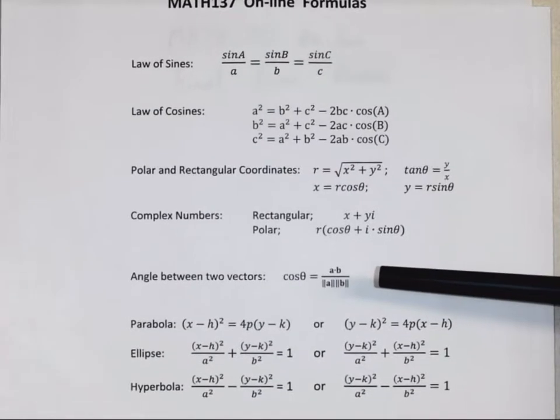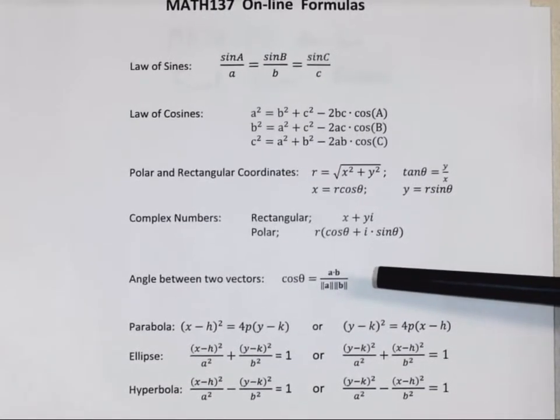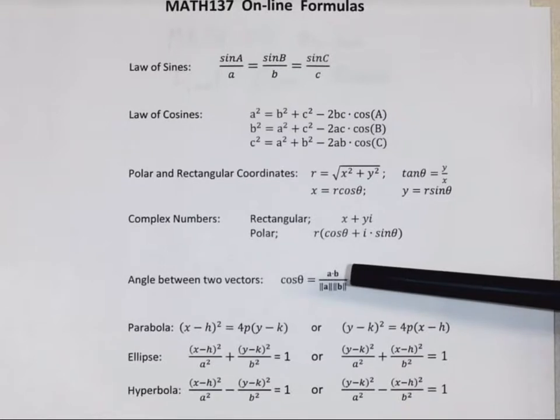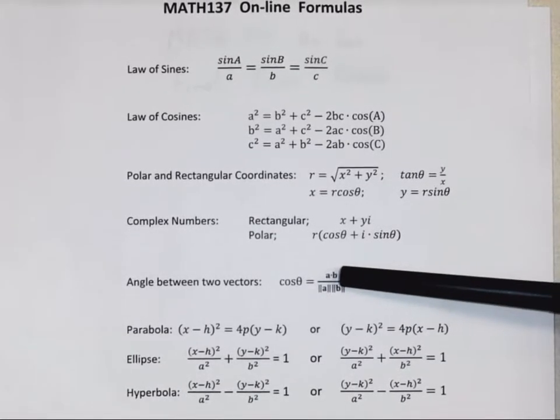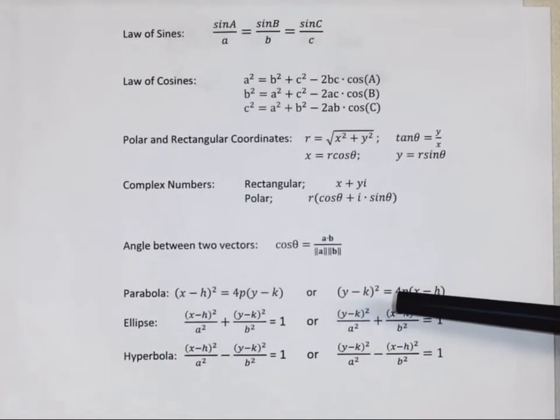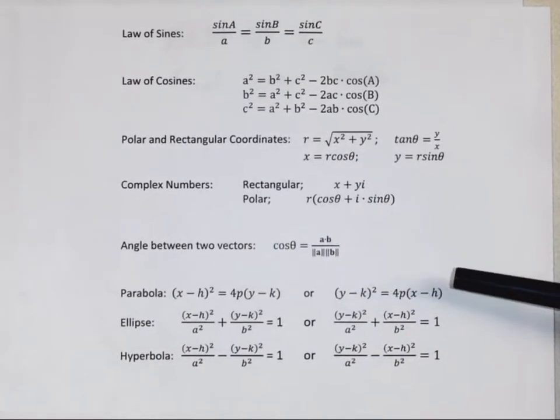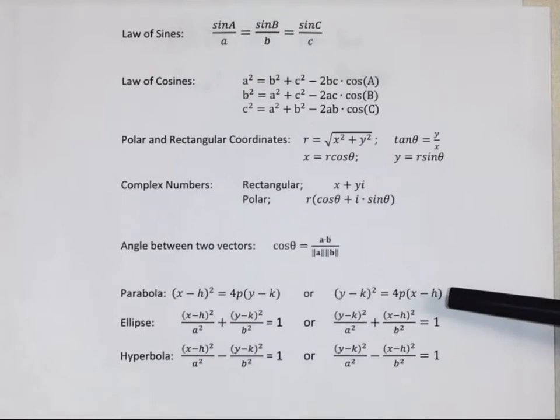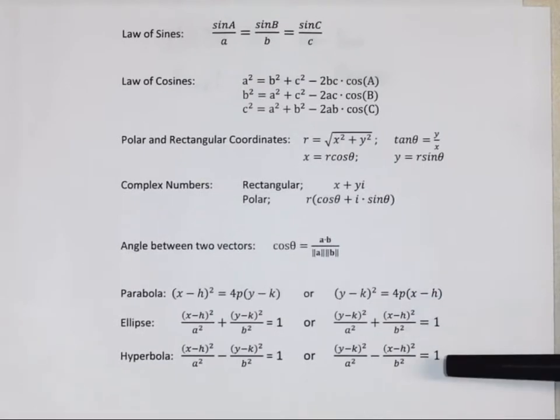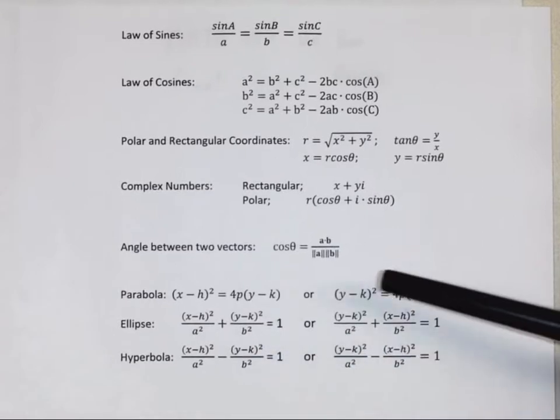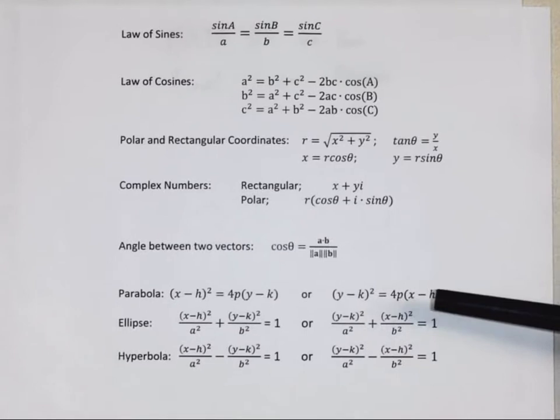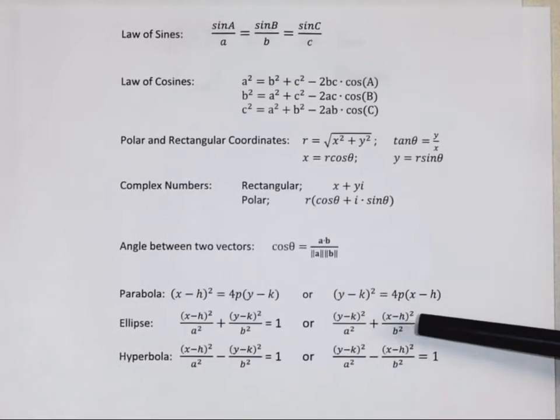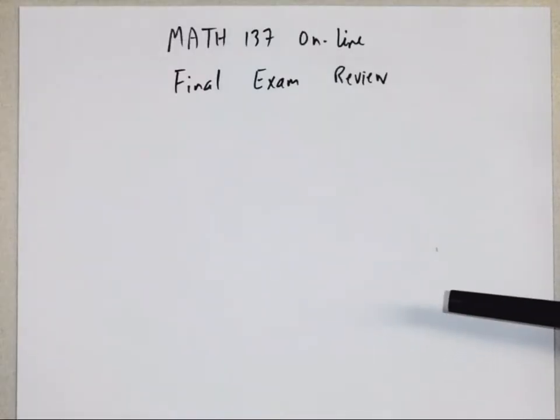And then the section about looking at complex numbers written both with rectangular and polar coordinates. Here, in terms of vectors, this is the equation to find the angle between two vectors. Remember, this is the dot product, A dot product B. Then finally, the last section of the class where we dealt with really more geometry, parabolas, ellipses, and hyperbolas. And each one of these have two equations according to which kind you have. So this is the formula sheet. It's already on IvyLearn, so you can look at it and use it.